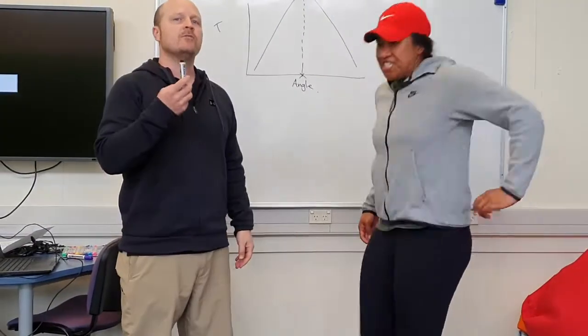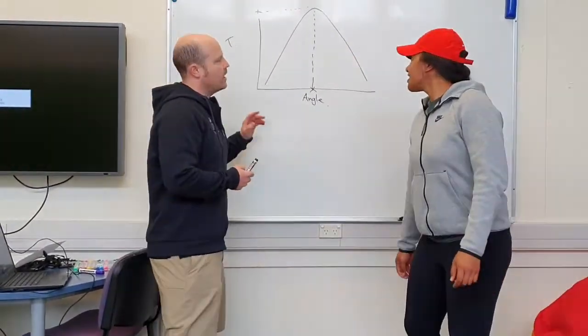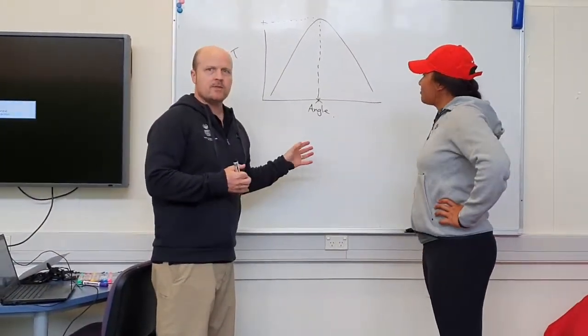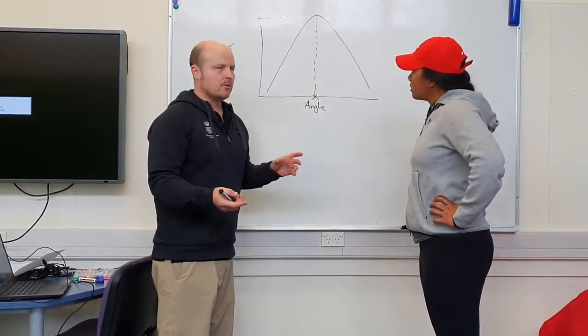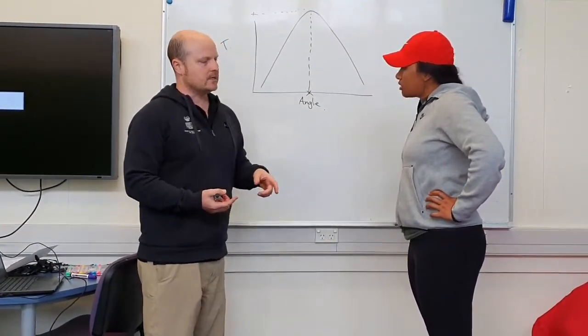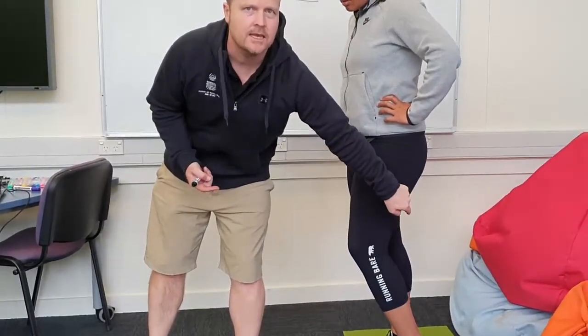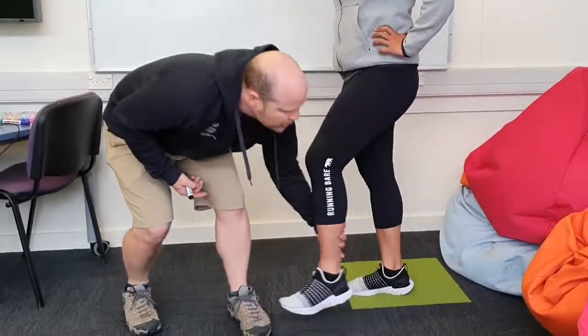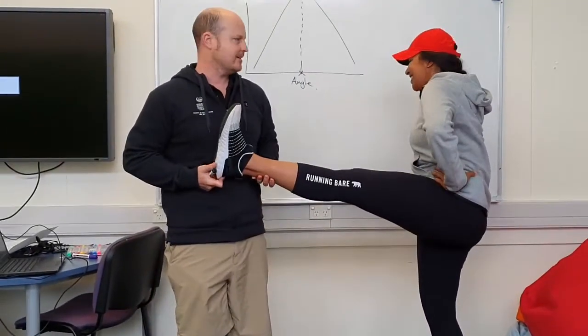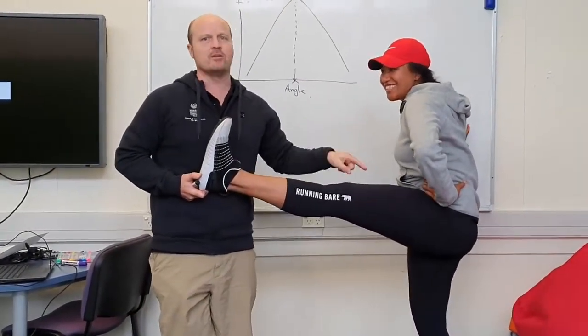So if the angle of peak torque is at long muscle lengths, the athlete is going to be quite safe from tearing. Whereas if the angle of peak torque is like here, where the hamstring is in a shortened position, it means it's going to necessarily be weaker here and Lonnie's is going to tear.